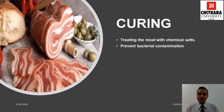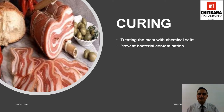Curing is a process of surrounding meat, fish or poultry with salt. The salt contains curing agents and is called curing salts. Curing is a method of preservation and the process dehydrates the meat and thereby preserves it. Curing is one of the most important things to do when preparing meat for Charcuterie, as it is meant to prevent bacterial contamination.